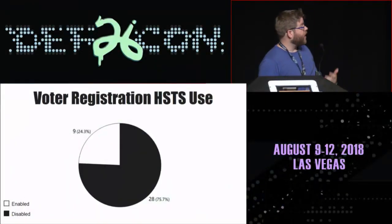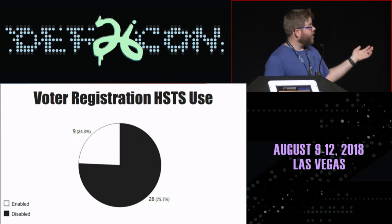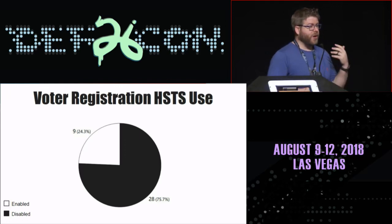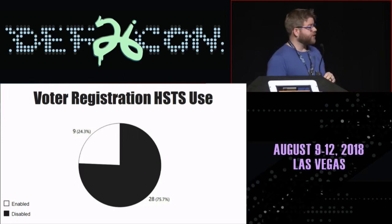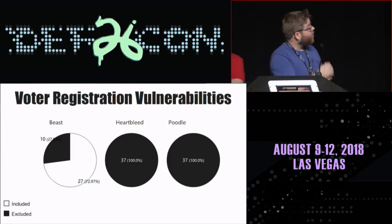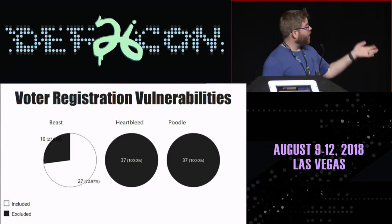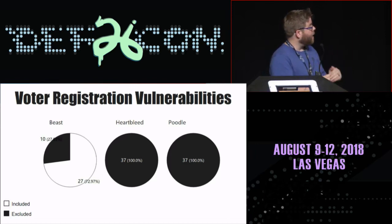HSTS use inside of voter registration systems: we saw that not a lot of folks — only about 25% of the VR systems — had HSTS, which is HTTP Strict Transport Security. This basically can help stop man-in-the-middle attacks when you're initially requesting the HTTP version of a page versus an HTTPS version. No one was on the HSTS preload list, and we think that would be a really great thing for voter registration systems to sign up for. For voter registration vulnerabilities: there was no Heartbleed, no POODLE. We did see some ROBOT but had difficulty parsing those results. BEAST was a fairly common occurrence. There are a number of states that still have that in there — not the biggest issue, but definitely want to get that sorted.